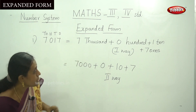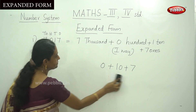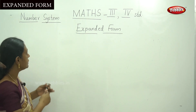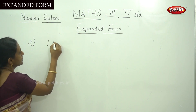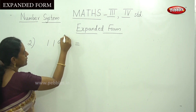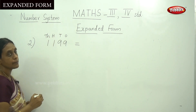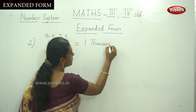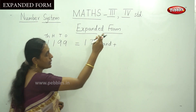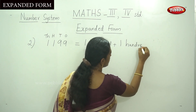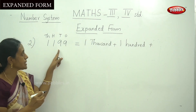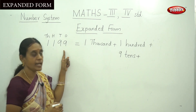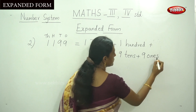You can understand this — that is a two way of writing numbers. One more example, that is the second example. One thousand, that is ones, tens, hundred, and thousand. So one thousand, write down this place value, plus one hundred, and plus that is nine tens, plus that is the last number, nine ones.